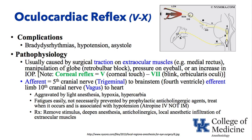The corneal reflex: if you touch the cornea with a Q-tip, the person should blink. Sensation in the cornea is the 5th cranial nerve, and the blink is the orbicularis oculi, supplied by the 7th cranial nerve. So differentiate: oculocardiac is CN5–10, and the corneal reflex is CN5–7.